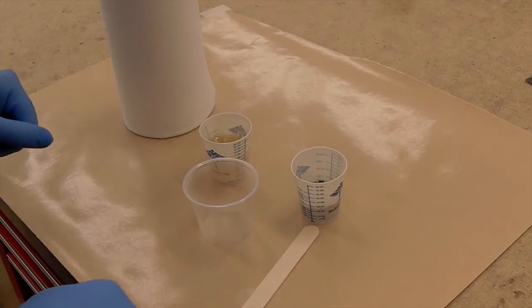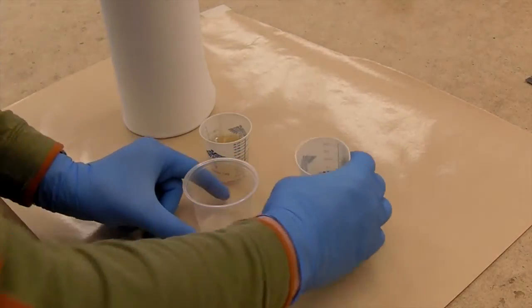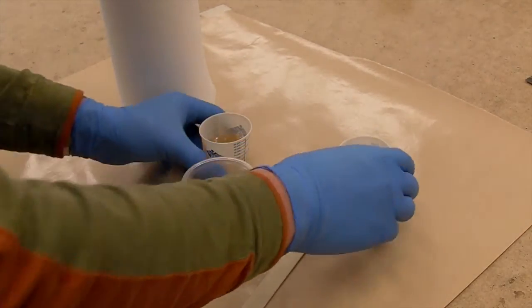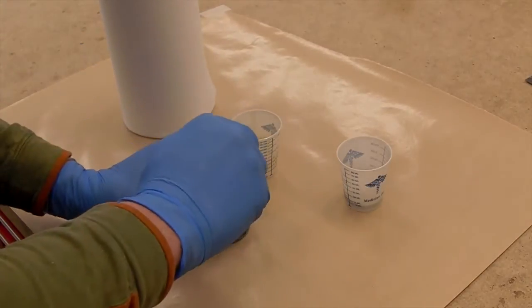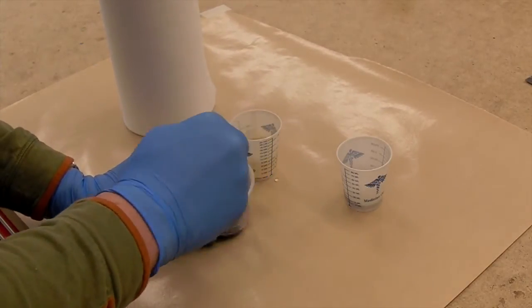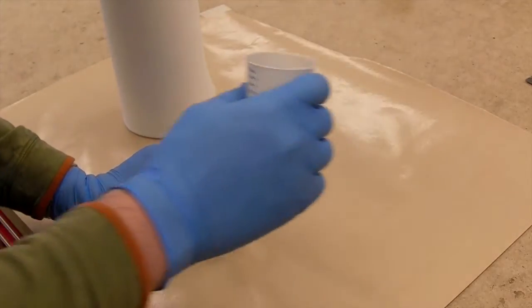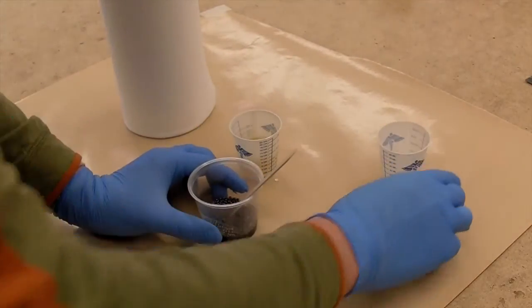Now we'll make our slug with the shot and epoxy. First pour half the shot in, mix it up with epoxy, then pour the other half of the shot.